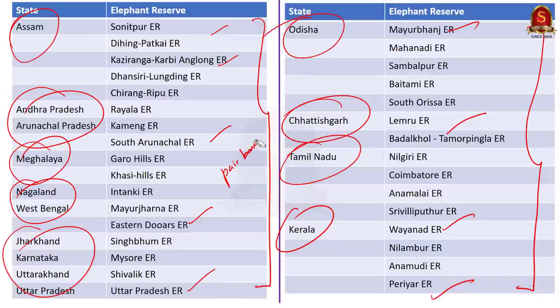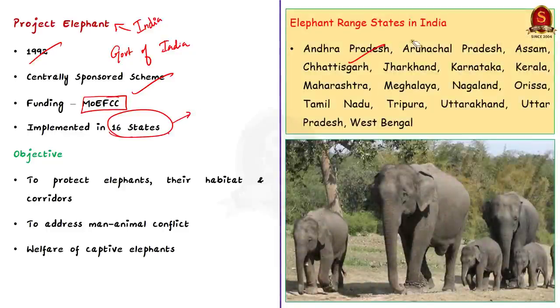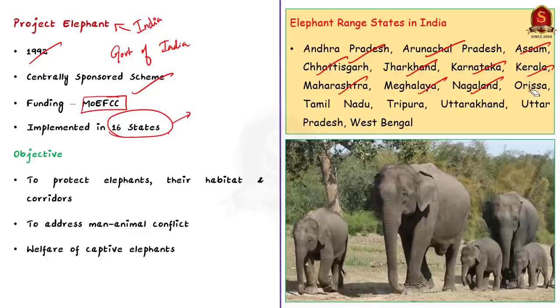Now let us see two efforts to preserve the elephant population. One is India's effort, the other one is international effort. First, let us take the Indian effort. It is nothing but the project elephant. It was launched by Government of India in 1992 and it is a centrally sponsored scheme. It means that the financial and technical support is provided by the Ministry of Environment, Forest and Climate Change. In India, elephants occur in 16 of the 28 states in the country. It is in these 16 states the project elephant is implemented. And the 16 states are Andhra Pradesh, Arunachal Pradesh, Assam, Chhattisgarh, Jharkhand, Karnataka, Kerala, Maharashtra, Meghalaya, Nagaland, Odisha, Tamil Nadu, Tripura, Uttarakhand, Uttar Pradesh and West Bengal. The project elephant has three main objectives. First is to protect elephants and their habitat and corridors and then to address the issues of man-animal conflict and to make sure project elephant ensures the welfare of captive elephants.